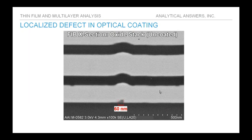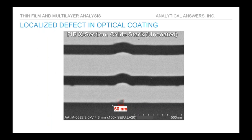Another buried defect — this one extremely small, 60 nanometers as measured on the image. As it replicates up through the film stack, it expands slightly, giving a feature size sufficient to locate using the FIB's high-resolution imaging capability. The fine focused FIB beam allows for a very precise cross-section to catch this defect core — extremely difficult, if not impossible, to do with a polished cross-section.